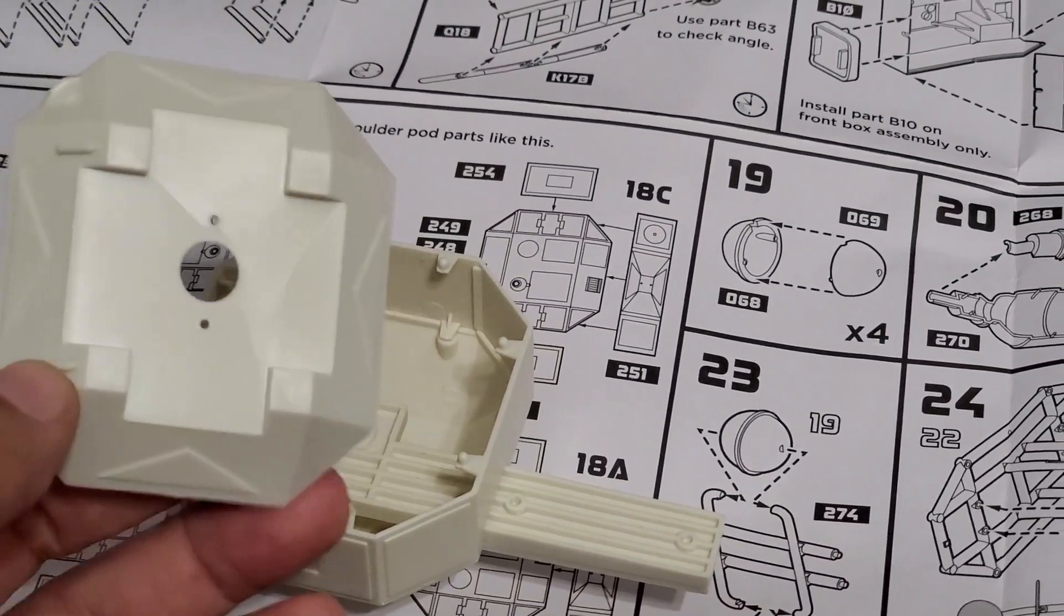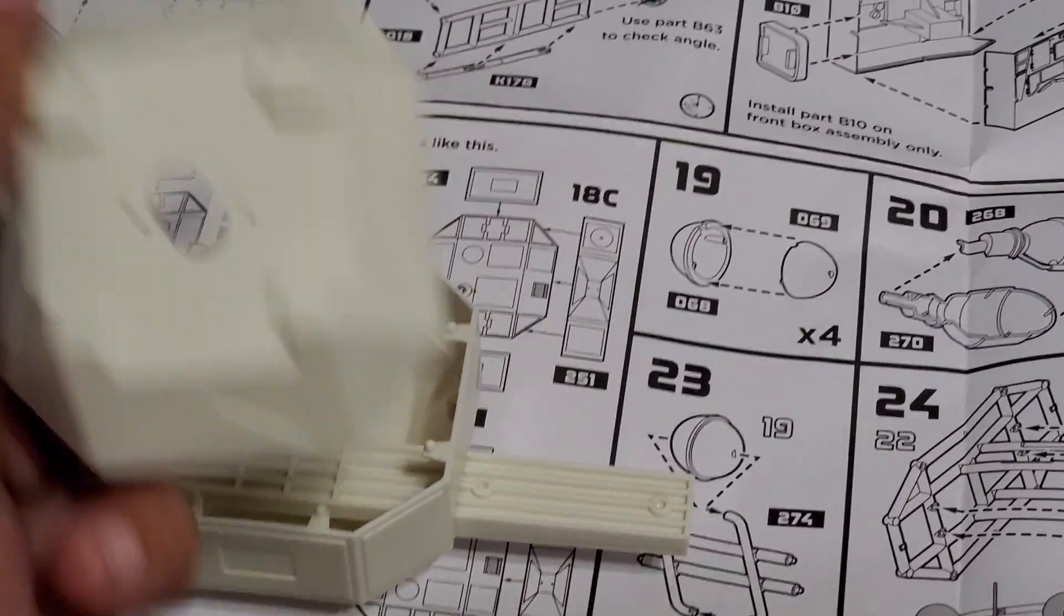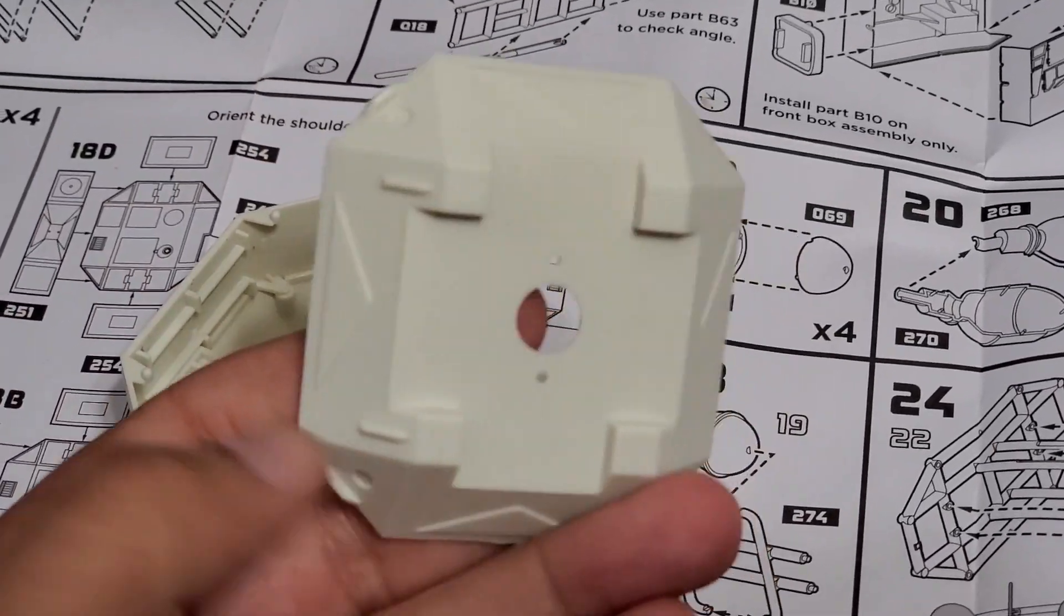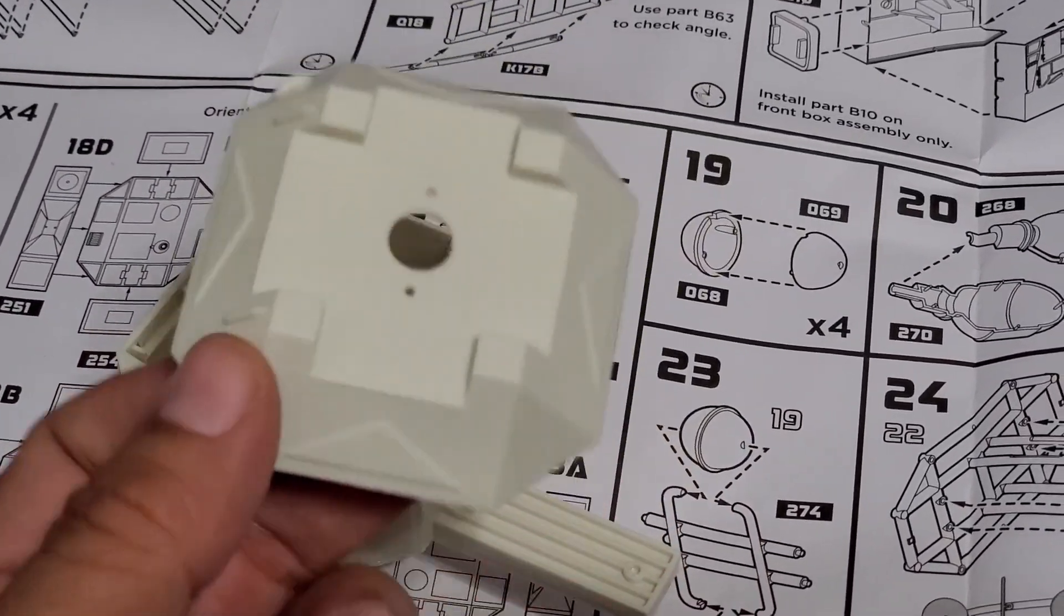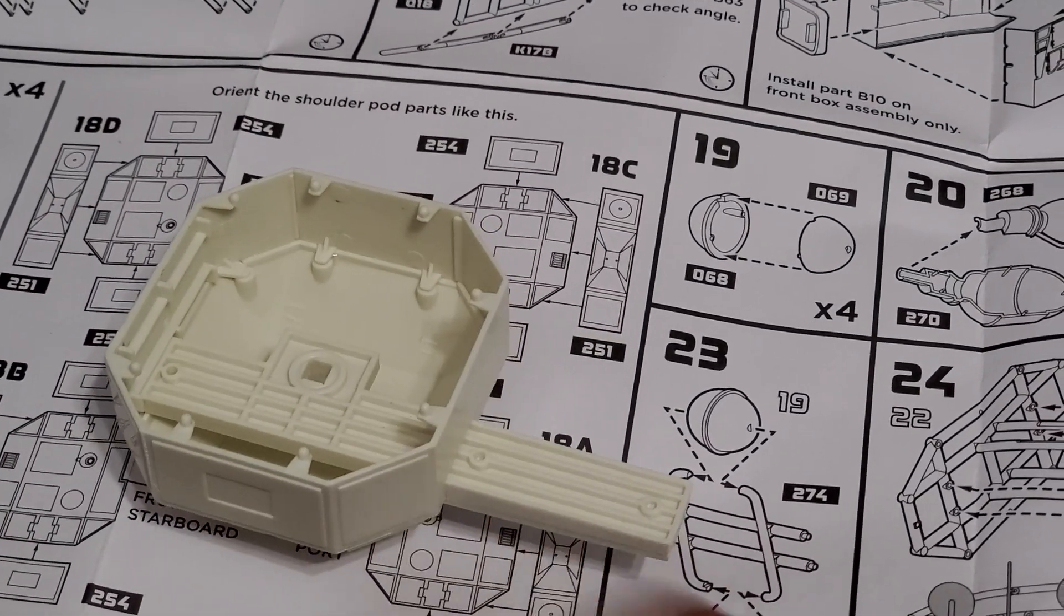Just be aware of that because, knowing me, I had one in four chance of messing this up. So remember, these always protrude out opposite of where the ship is, where this leg is.